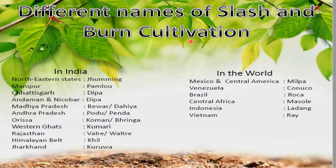Slash and burn cultivation is known by different names in India. In northeastern states it is known as Jhum; in Manipur, Pamlu; in Chhattisgarh and Andaman & Nicobar, Dipa; in Andhra Pradesh, Bewar, Dahiya; in Odisha, Podu or Penda; in Western Ghats, Kumari; in Rajasthan, Waltre or Valter; in the Himalayan belt, Kheel; and in Jharkhand, Kurwa.